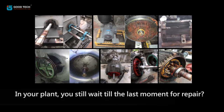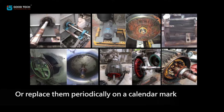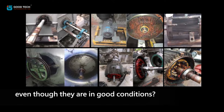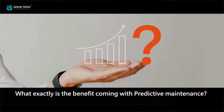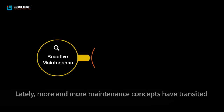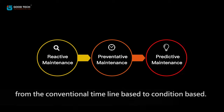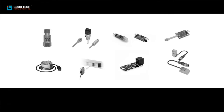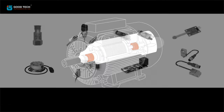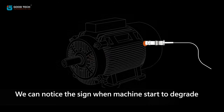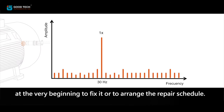In your plant, do you still wait until the last moment for repair? Or replace machines periodically on a calendar mark even though they are in good condition? What is the concept of the recent predictive maintenance trend, and what exactly is its benefit? Lately, more and more maintenance approaches have transited from conventional timeline-based to condition-based. Predictive maintenance leverages all kinds of measurement technologies to figure out machine health condition. We can notice the signs when machines start to degrade at the very beginning, to fix issues or arrange a repair schedule.